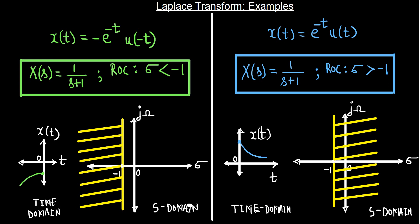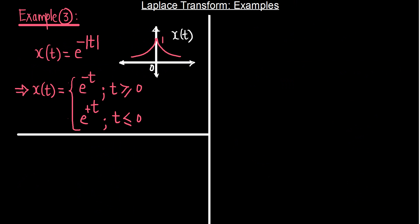Now let's take a signal that is bidirectional, that is both-sided. Consider the example x(t) = e^(-|t|). The modulus indicates that x(t) equals e^(-t) for t > 0 and e^t for t < 0. The signal is bidirectional — it extends towards both right and left. Let's find the Laplace transform of such a signal.